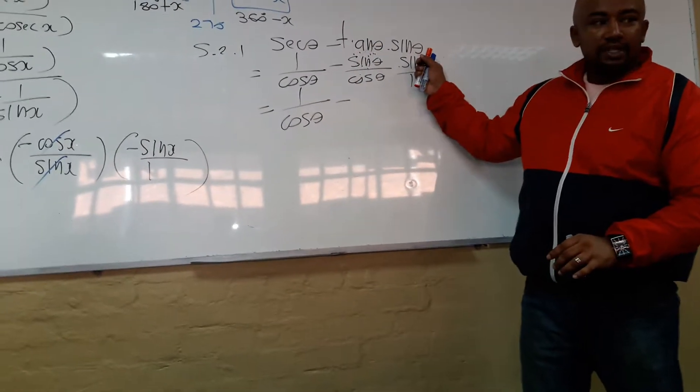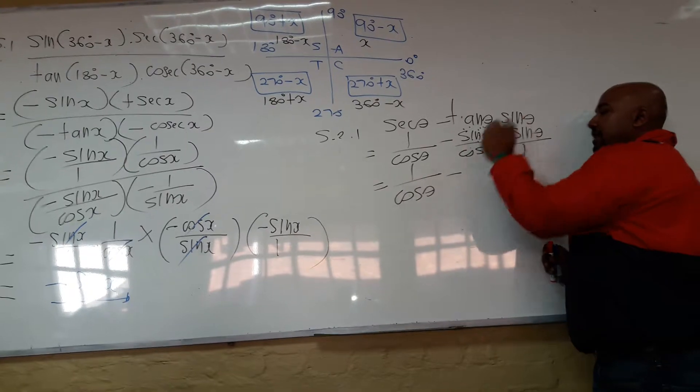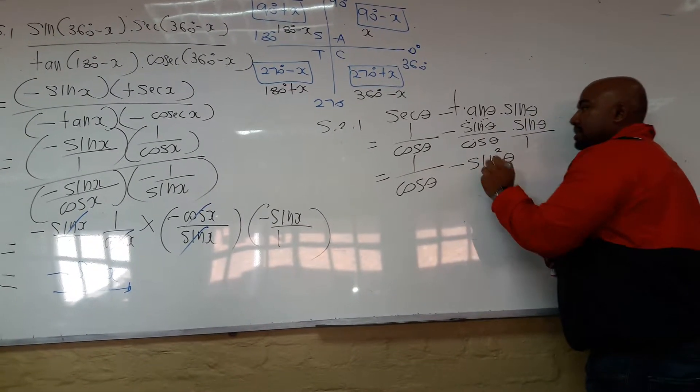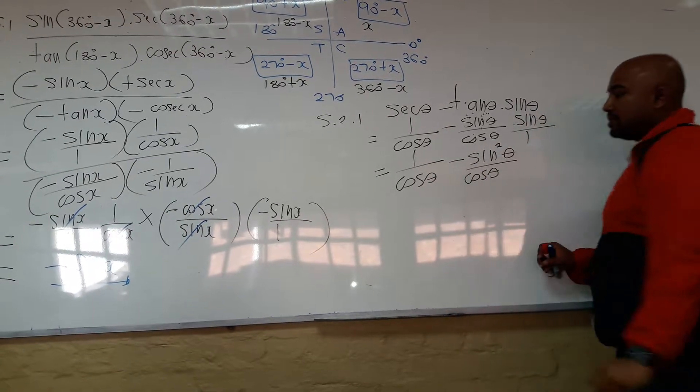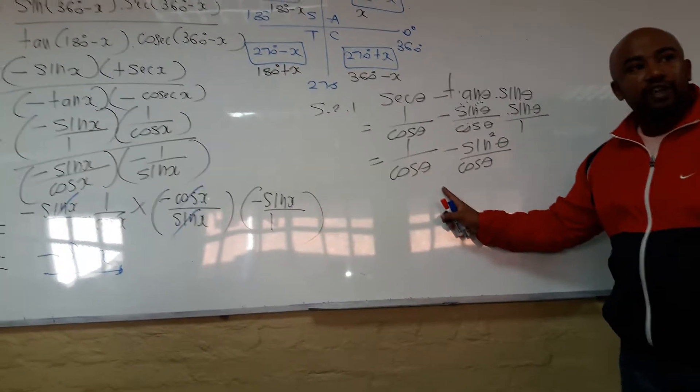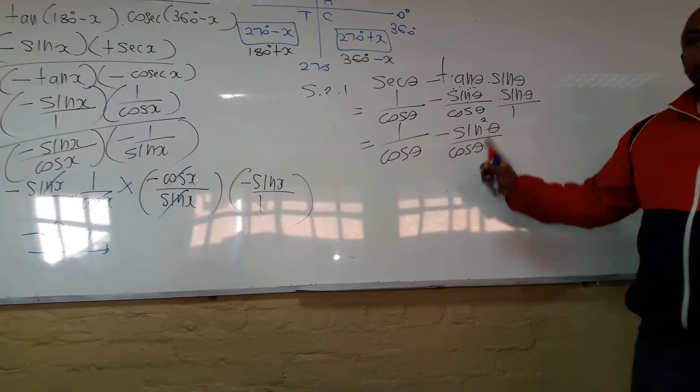Numerator times numerator. Denominator times denominator. Minus sine times sine is minus sine squared. Cosine times one is just cosine. Now, we are dealing with fractions. We need to add or subtract. There's a minus sign. We need to subtract.